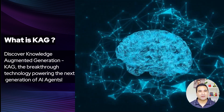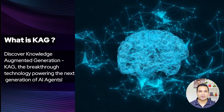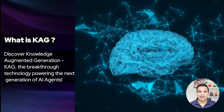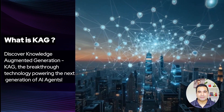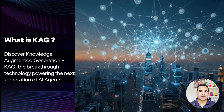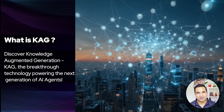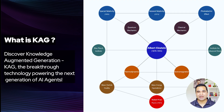At its core, Knowledge Augmented Generation — KAG — is about combining the power of structured knowledge with the intelligence of AI agents. Think of it as a giant web of interconnected facts. Each node represents an entity, like a person, place, or thing, and the edges represent the relationships between them. For example, in a knowledge graph, you can see that Albert Einstein developed the theory of relativity, and that theory is part of the field of physics. This structure makes KAG perfect for answering complex multi-hop questions.